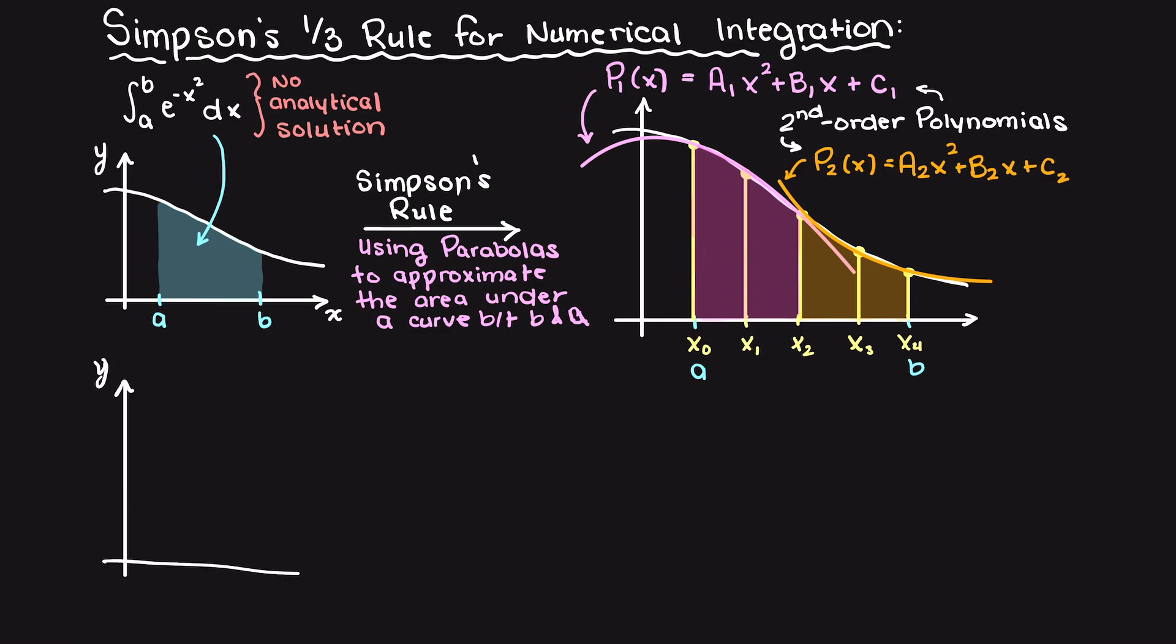To approximate the definite integral, let's begin by developing a general equation for any parabola's area estimation between two points. Then we will move forward combining the areas of multiple parabolas like our above diagram.